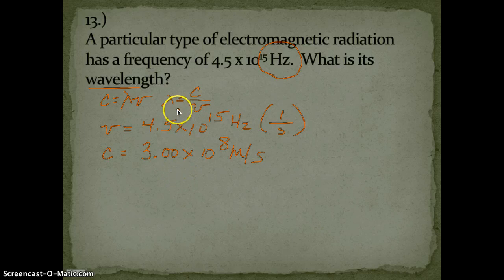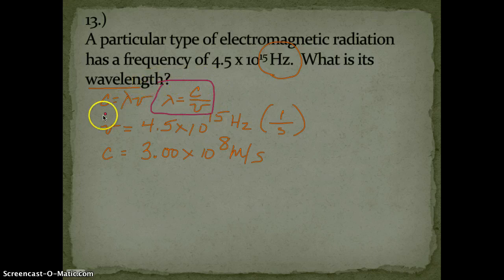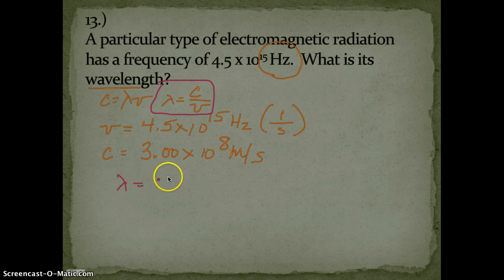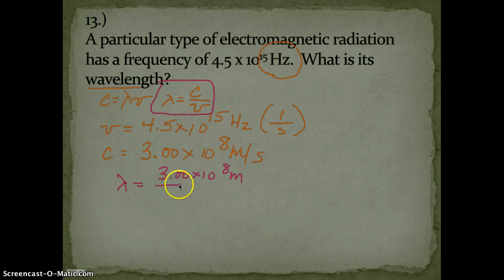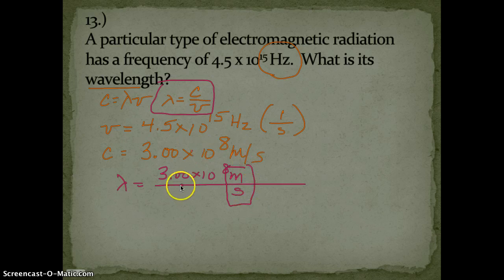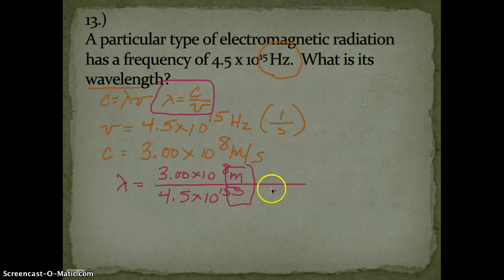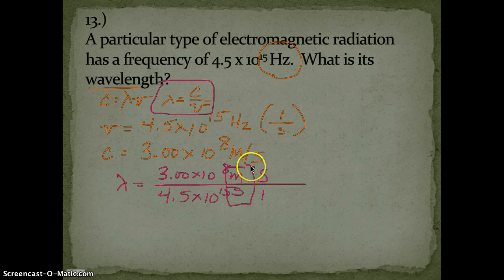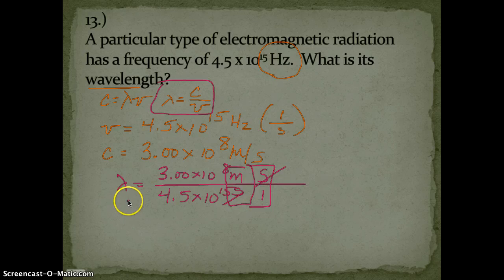If we go back here and look at our rearranged equation, we're going to plug into this now. You don't go back and plug into the initial basic equation; you always plug into the rearranged one. Our wavelength is going to be equal to 3.00 times 10 to the 8th meters per second on top, and on the bottom I'm going to put 4.5 times 10 to the 15th. This is waves per second, but since this is a denominator I'm going to flip that. When you see that, you should be able to cross out seconds and you're left with meters.